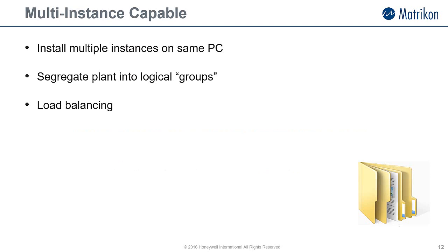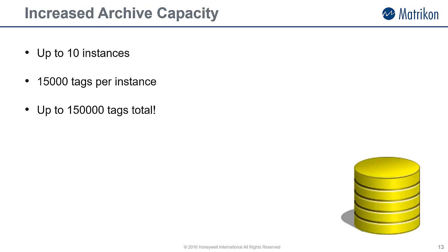First up, Desktop Historian is now a multi-instance capable product. This means we can install multiple instances of Desktop Historian on the one computer. You could use this functionality to segregate your plant into local areas, or maybe for load balancing. This also means a huge increase in the possible archived tag count. Previously, Desktop Historian was good to about 15,000 tags per install. In version 5.1, you can configure up to 10 instances with 15,000 tags per instance, which gives us a possible 150,000 total tag count.